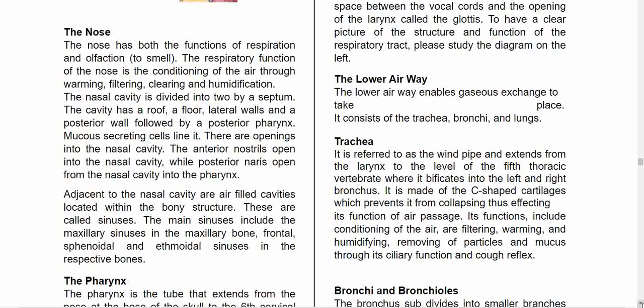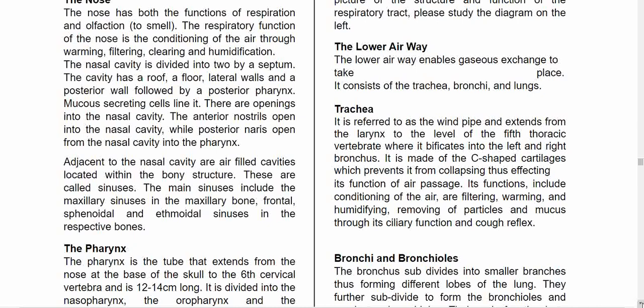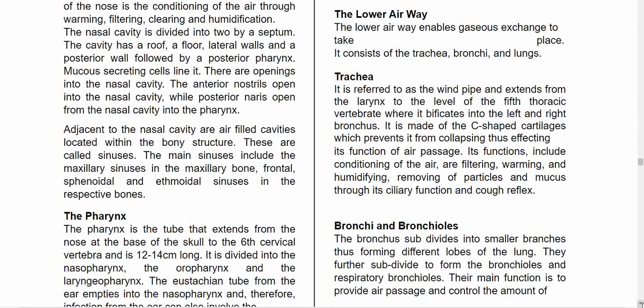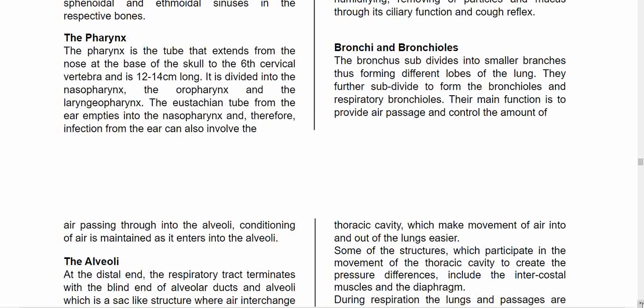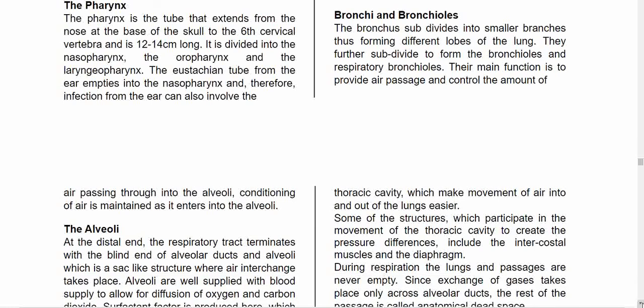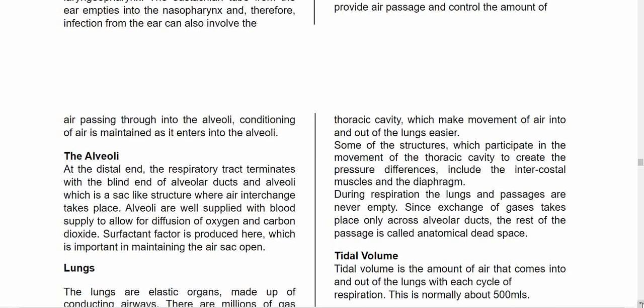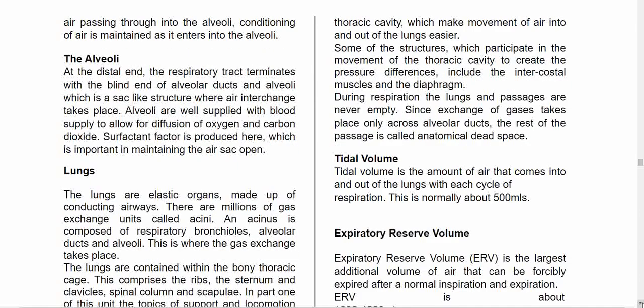The lower airway enables gas exchange to take place directly with the tissues. The trachea, referred to as the windpipe, extends from the larynx to the level of the fifth thoracic vertebra, where it bifurcates into the left and right bronca. It is made up of C-shaped cartilages which prevent it from collapsing. Its functions include conditioning, warming and humidifying air, removing particles and mucus through ciliary function, and the cough reflex. The bronca subdivide into smaller branches forming different lobes of the lungs, and their main function is to provide air passage and control the amount of air passing through into the alveoli.